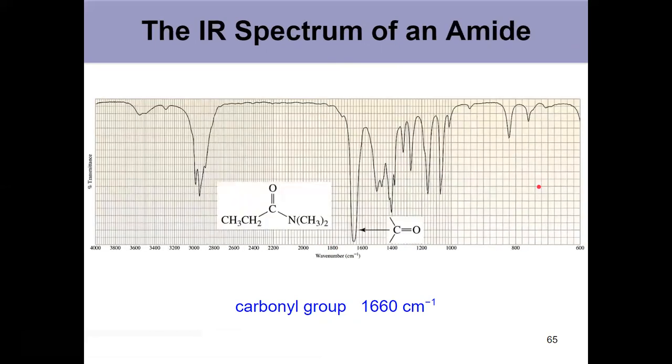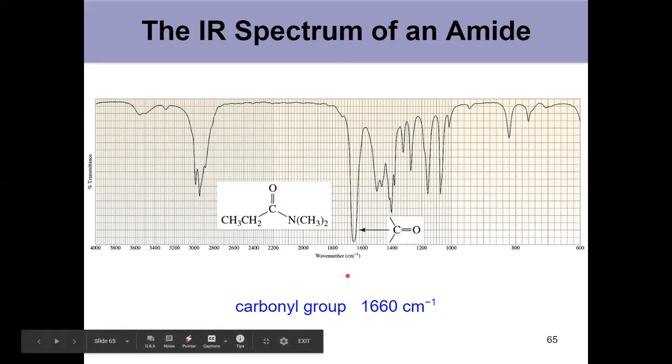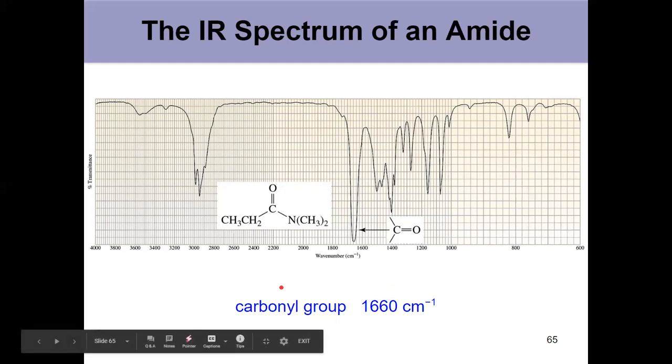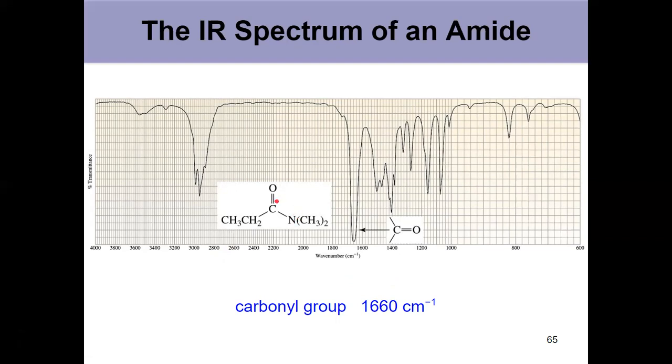What about an amide? Look at that shift down—now we're at 1660. There's quite a range where this carbonyl peak can show up, from 1660 to 1740. The nitrogen on the amide donates electrons by resonance, which causes the peak to shift right and appear at a lower wave number relative to our pure ketone at 1720. This shift right to 1660, which would be labeled on a test, tells you that you might be dealing with an amide. We'll see other factors that give clues later on.